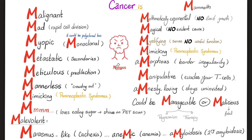Now to the mnemonic — the M mnemonic for cancer. Cancer is Malignant. Cancer is Mad — rapid cell division. Cancer is Myopic — usually monoclonal, one crazy cell. Cancer can Metastasize; we call these secondaries. The original cancer is called the primary — for example, lung cancer metastasizes to the brain; whatever is in the brain is called secondary, secondary to the primary in your lung.